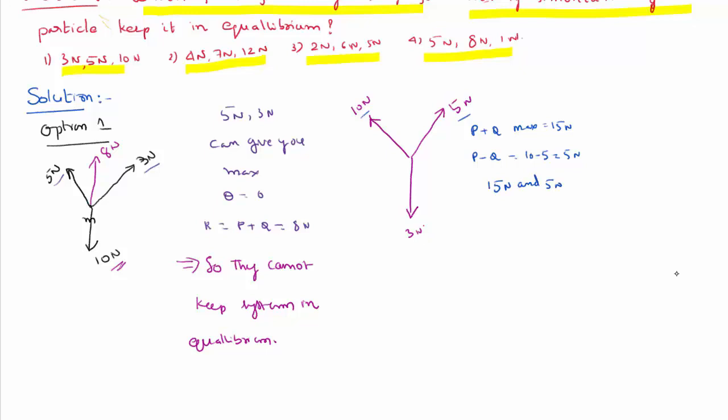But the downward force acting is 3 Newton, whereas the upward force depending on the angle is between 15 Newton and 5 Newton. So 3 Newton cannot compensate any value in between 15 and 5, which implies the system is not in equilibrium.